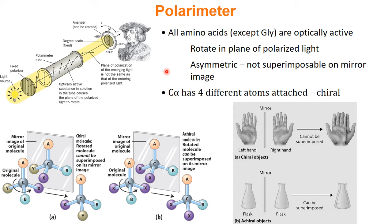A chiral molecule cannot be superimposable on the mirror image of itself — we call it asymmetric. The way to understand this in non-chemistry terms: if you take your left and right hand and look at your palms face up, you cannot superimpose your hands on each other, even though they are mirror images. While if you take a flask and take its mirror image, you can superimpose the two images. So we say your hands are chiral; the flask is non-chiral.